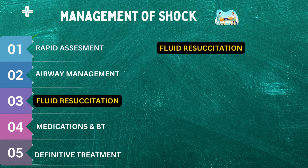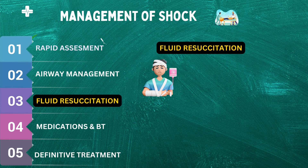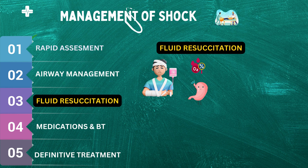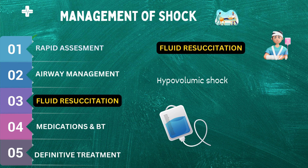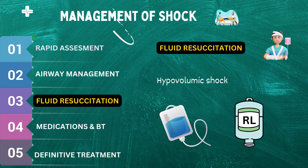Fluid resuscitation refers to the administration of fluids to restore circulating blood volume and improve tissue perfusion. The goal is to improve tissue oxygenation and prevent organ damage. Fluid resuscitation is typically initiated in the pre-hospital setting and continued in the emergency department. For hypovolemic shock, which occurs due to significant loss of blood or fluid, healthcare professionals will typically administer crystalloid solutions such as normal saline or lactated Ringer's solution. These solutions are isotonic, meaning they have a similar concentration of electrolytes as blood, and can help restore blood volume and improve tissue perfusion.